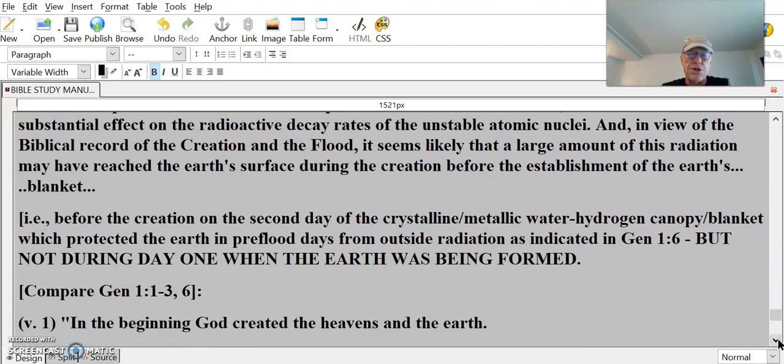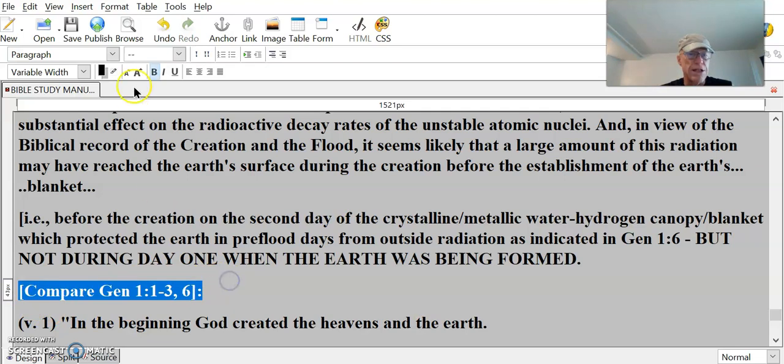I.e., before the creation of the second day of the crystalline, metallic, water-hydrogen canopy, super-frozen blanket, which protected the Earth in pre-flood days from outside radiation, as indicated in Genesis 1:6. But not during day 1, when the Earth was being formed. Let's read this. Compare Genesis 1, 1-3 and 6.